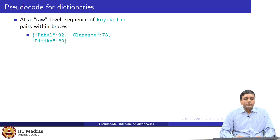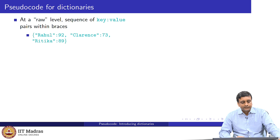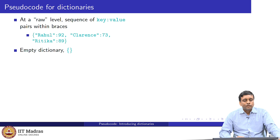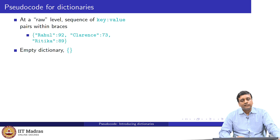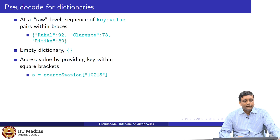Although we can specify dictionaries directly like this, this is not the usual way we create one. Usually, we create an empty dictionary — signaled by a pair of opening and closing curly braces with nothing inside — and then add values to it.